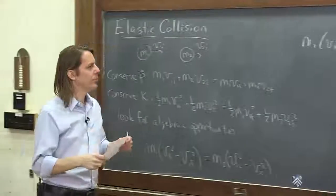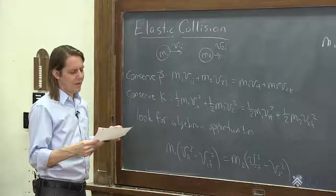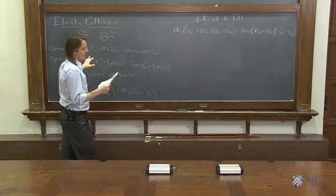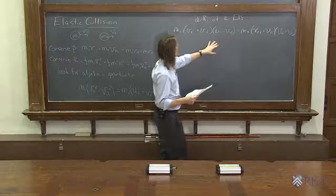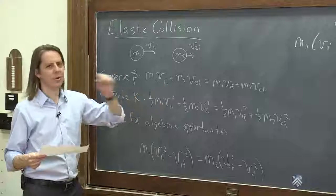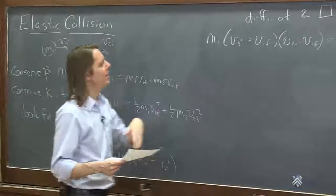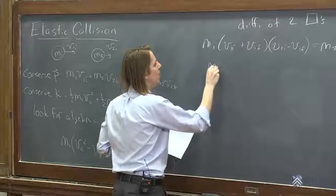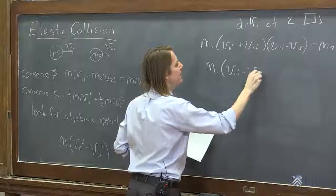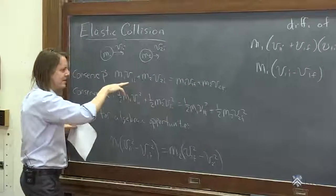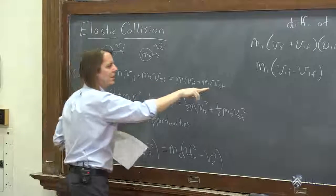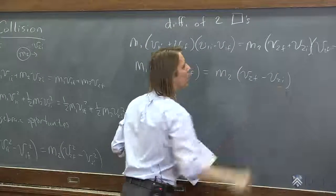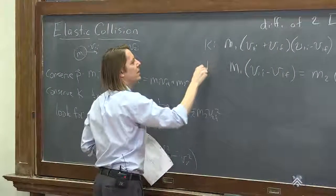We've just applied the difference of two squares to the energy equation. Now let's look at the momentum equation and rewrite it also in terms of those same sums and differences. We have M1 combined with V1i and V1f, so we write M1·(V1i − V1f) on the left side, and M2·(V2f − V2i) on the right side. So we still have two equations and two unknowns — kinetic energy K and momentum P.